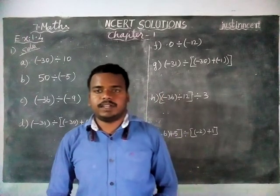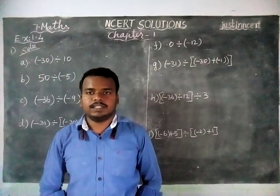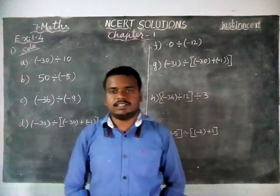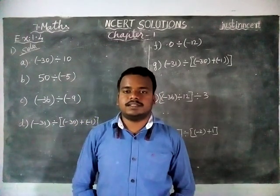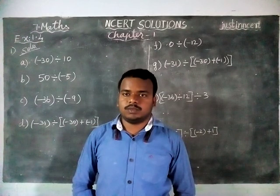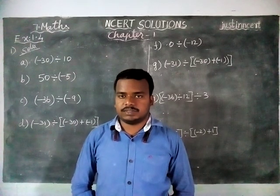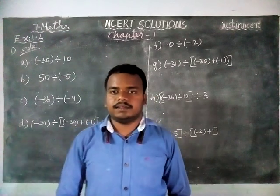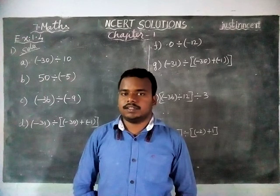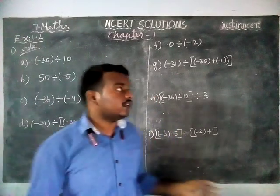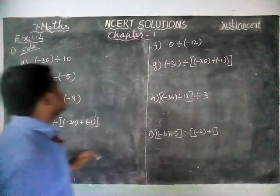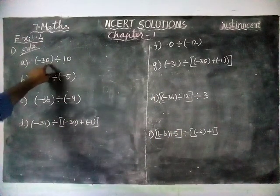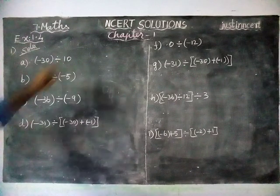Hi students, welcome to NCRT Solutions. In this video we are going to see 7th standard math exercise 1.4, first question. Here we have to find the values of the given things. Evaluate minus 30 divided by 10.